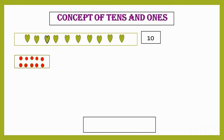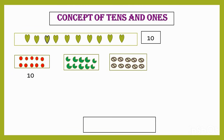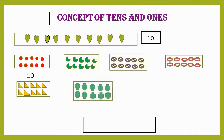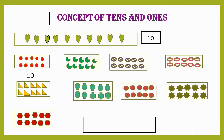Now here we can see the circles — 10 circles. That is 1 ten. Here 1 ten, here 1 ten. So 10, 10, 10, 10, 10, 10, 10, 10. Now you can see how many tens there are.